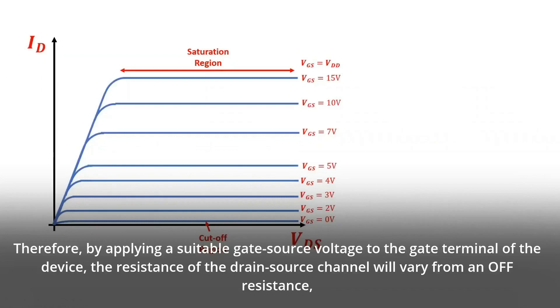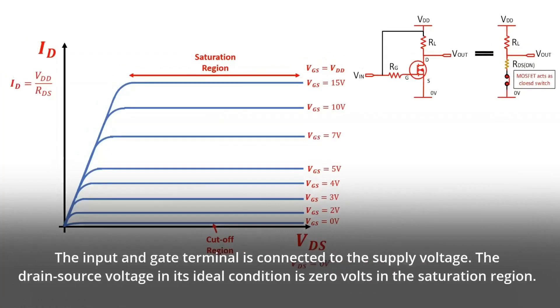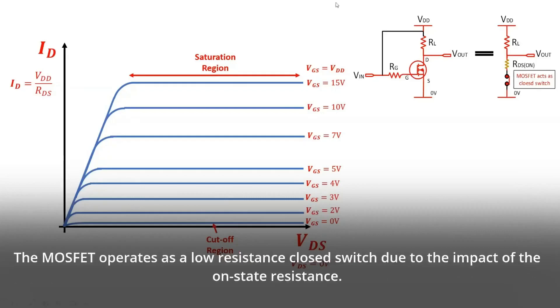This makes the device act as a short circuit. The input gate terminal is connected to the supply voltage. The drain source voltage in its ideal condition is zero volts in the saturation region. The MOSFET operates as a low resistance closed switch due to the impact of the on-state resistance.